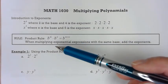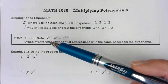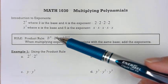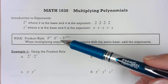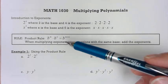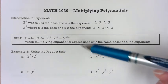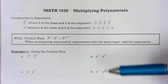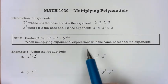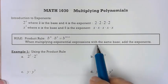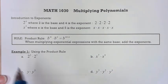The first rule is the product rule. If I have b to the m times b to the n, that can be simplified to b to the m plus n. Notice I'm adding the exponents. So when multiplying exponential expressions with the same base, you just add the exponents.